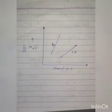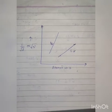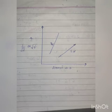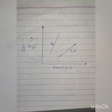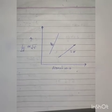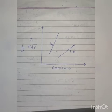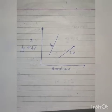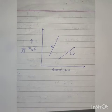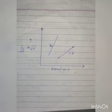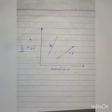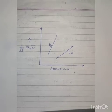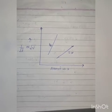Moseley performed the experiment where he studied only the k-alpha and l-alpha lines. He noticed a striking regularity in the spectral lines of each series.